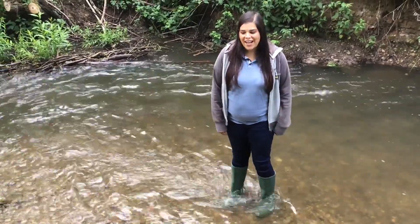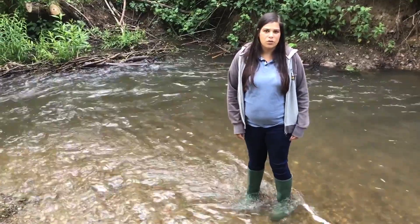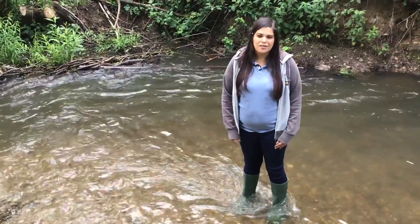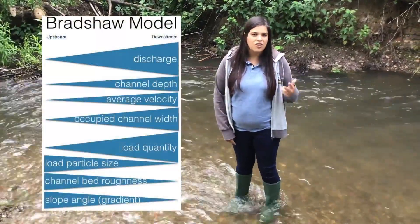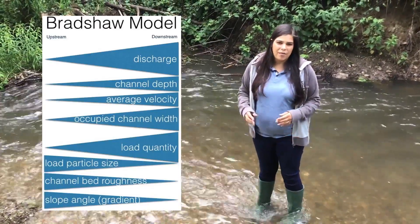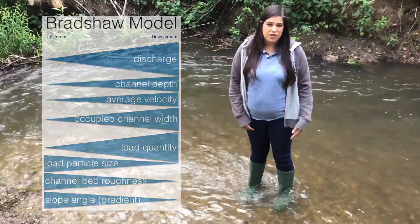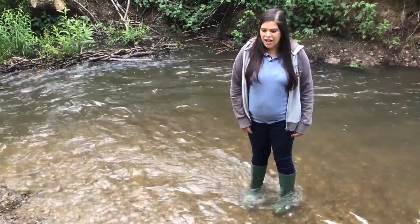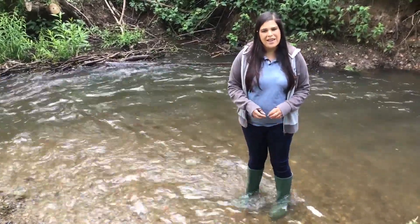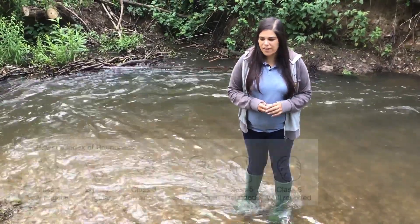What we're doing today is looking at to what extent Blackbrook follows the Bradshaw model. The Bradshaw model tells us a lot of different things about how the river acts. The velocity, discharge, width, and depth as we go further downstream should increase, and the bed load should actually decrease due to erosion. We're also going to look at the load particles and Howard's index of roundness to see how the roundness of the bed load changes as we move further downstream.